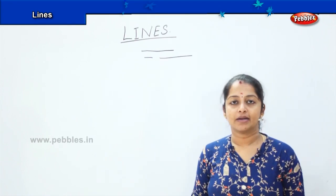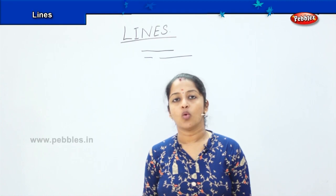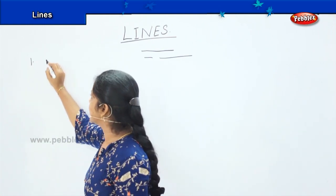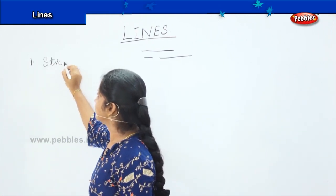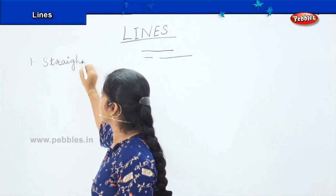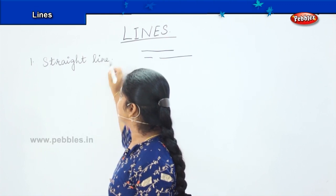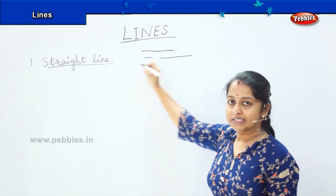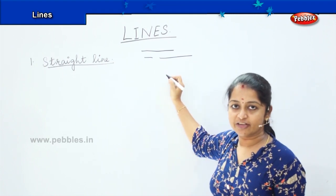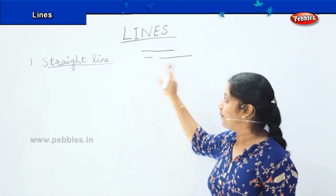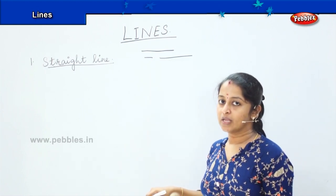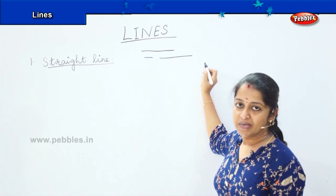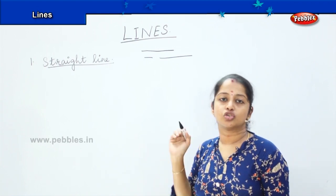Lines are divided into two categories. We will now see what are the different types of lines which we use. The first one is the straight line. Any line which is drawn with a starting and an ending point on a straight, plain surface is called a straight line. Can you see any curve in between? No — it just goes on a straight basis, and we usually use a ruler to draw the straight line.